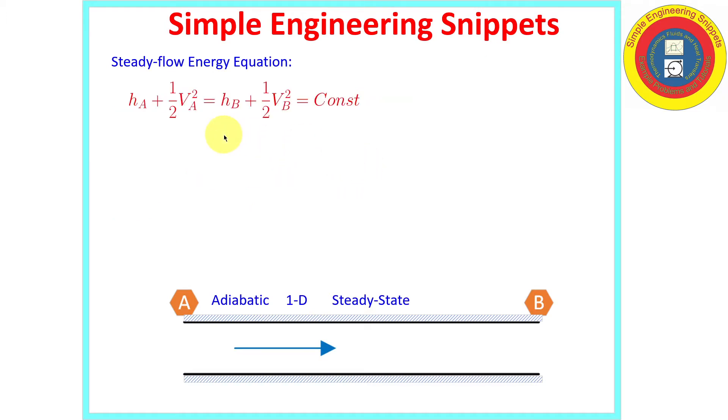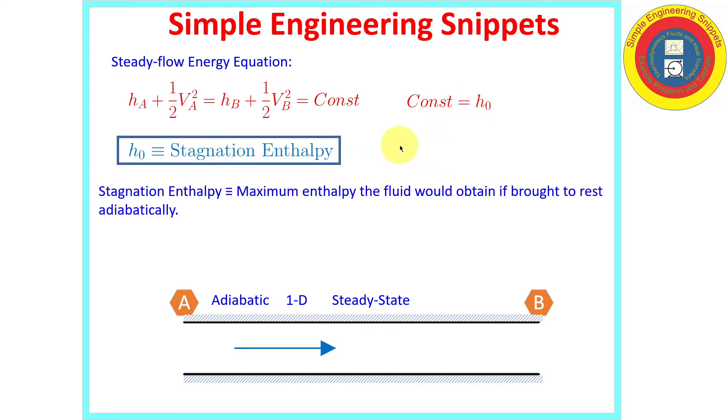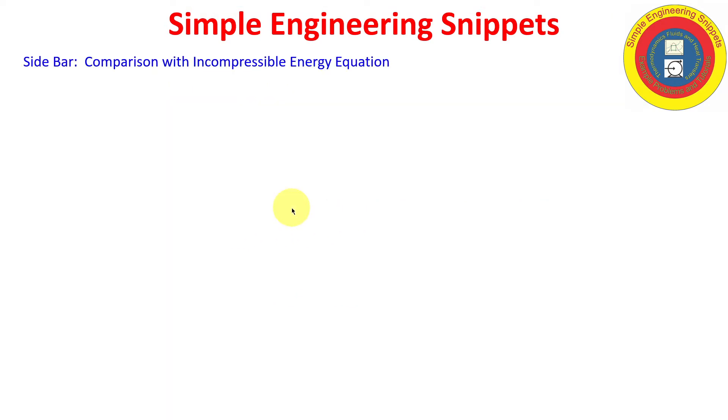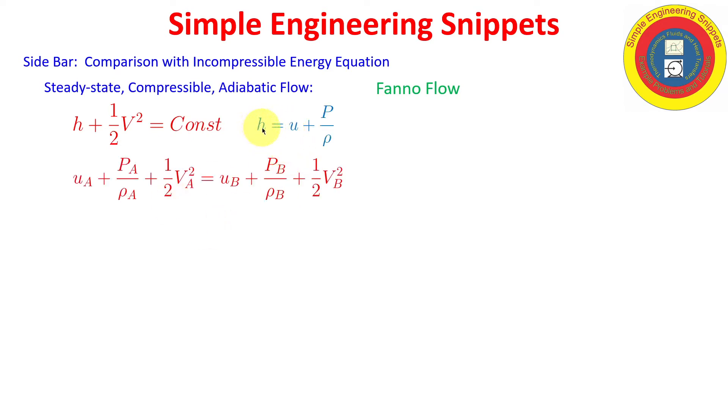Okay, with that the equation simplifies to the enthalpy plus the kinetic energy term, and that is equal to a constant. It's very convenient when we get to compressible flows to define that constant as the stagnation enthalpy. And what is the stagnation enthalpy? That is the maximum enthalpy the fluid would obtain if brought to rest isentropically. We won't be using that too much in this but what I would like to do is go ahead and compare the compressible flow equation with the incompressible energy equation. So what we just came up with for Fanno flow is the enthalpy plus the kinetic energy term is equal to a constant. And I can substitute in the definition of the enthalpy and obtain this equation where we have the internal energy plus the flow work term plus the kinetic energy term.